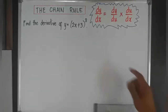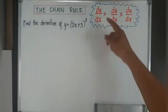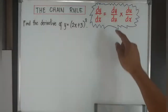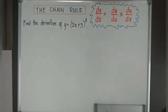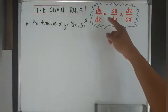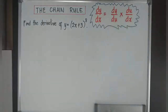Chain rule says dy over dx is equal to dy over du. You will notice there's another variable besides y and x, which is u. But u is another variable that will substitute something in our function. So how do we apply this rule? It says dy over dx is equal to dy over du times du over dx.